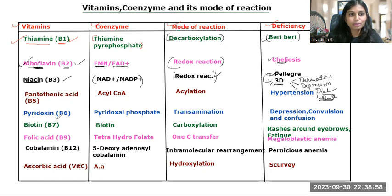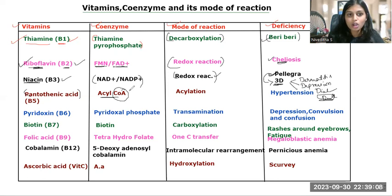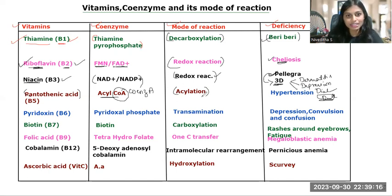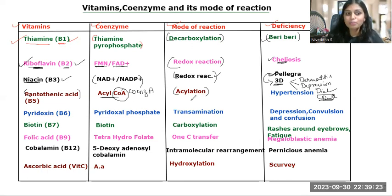Next is vitamin B5, that is pantothenic acid. The coenzyme of pantothenic acid is Acyl-CoA — CoA stands for Coenzyme A. The mode of reaction is acylation, which is the transfer of an acyl group. When there is a deficiency of vitamin B5, it leads to hypertension or high BP.